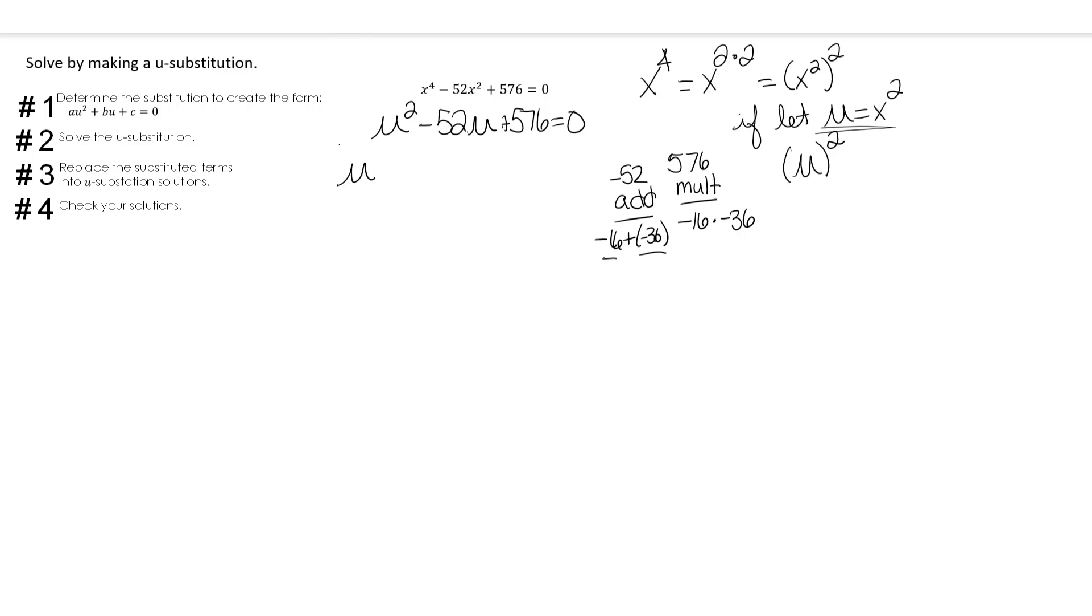So we're going to have u minus 16 times u minus 36 equals 0.